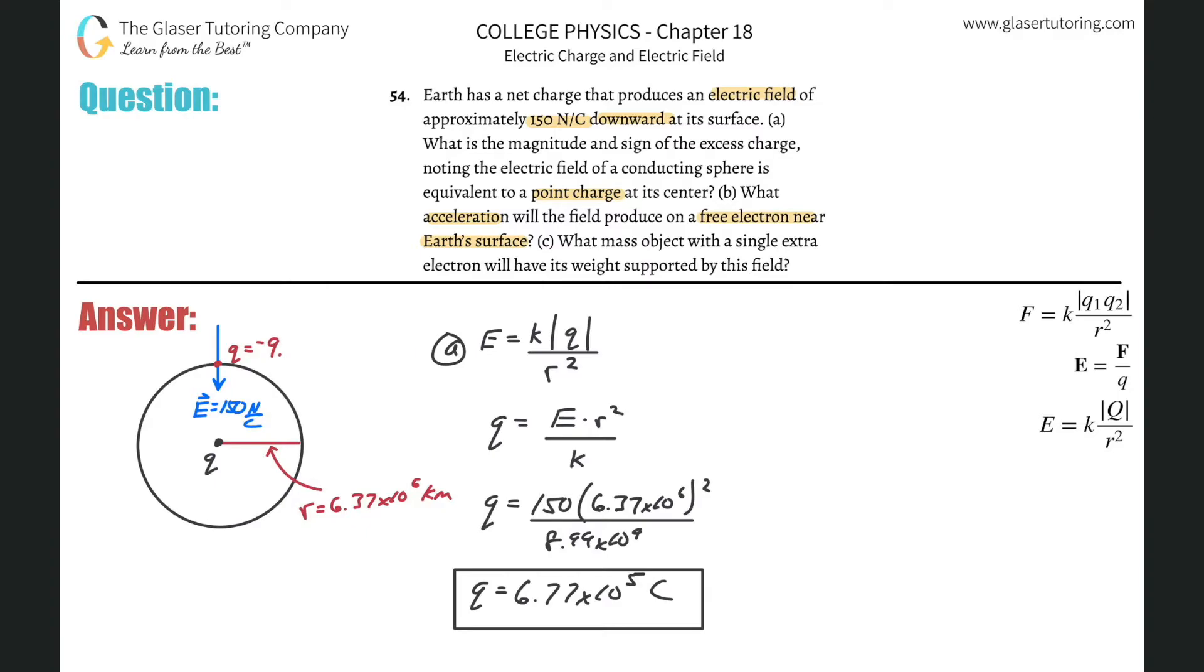And the charge of an electron, what is it? It's going to be equal to negative, right? Negative 9.11, that's the mass. What am I doing? Negative 1.6 times 10 to the negative 19th. Negative 19th. It's a little early here, so I apologize. Negative 19th Coulombs. So that's the charge.